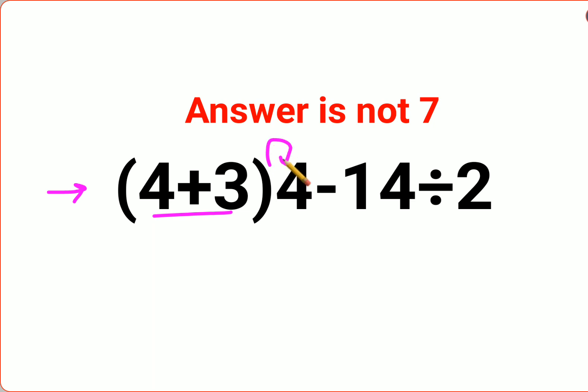Please understand when there is no sign between this bracket and this 4, that means it gets multiplied, minus 14 divided by 2. A lot of people thought that the answer for this one is supposed to be 7, but that my dear friends is incorrect.